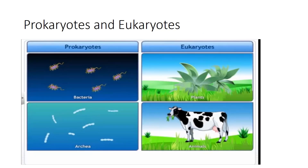This is the introductory slide on prokaryotes and eukaryotes. Prokaryotes are organisms that do not have a well-defined nucleus, whereas eukaryotes have a well-defined nucleus. Prokaryotes include bacteria, archaea, and blue-green algae. Eukaryotes include plants, animals, and fungi.